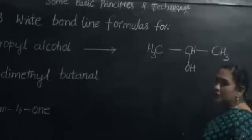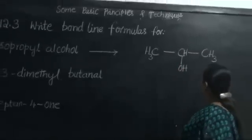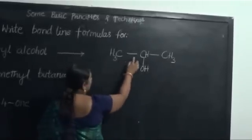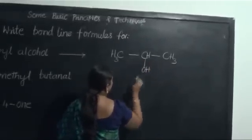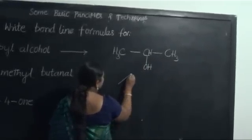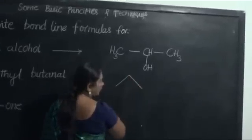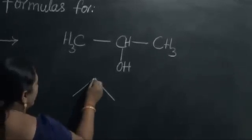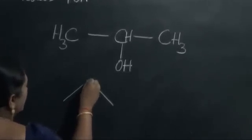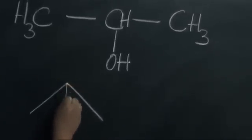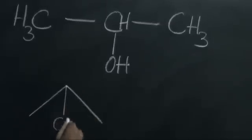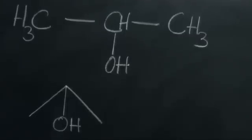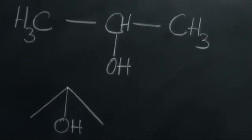When we have written the expanded structure, let us write the bond-line structure. How many carbon atoms? One, two, three. Each end is representing one carbon atom. With respect to the second carbon atom, we find the presence of OH. This is the bond-line formula for isopropyl alcohol.